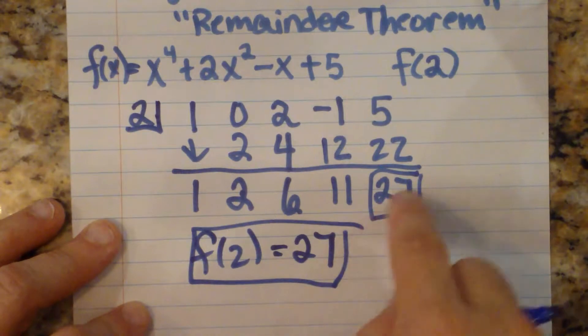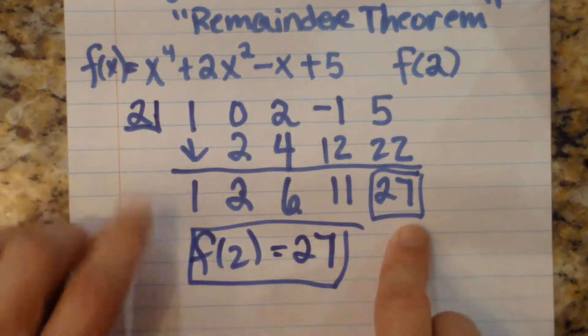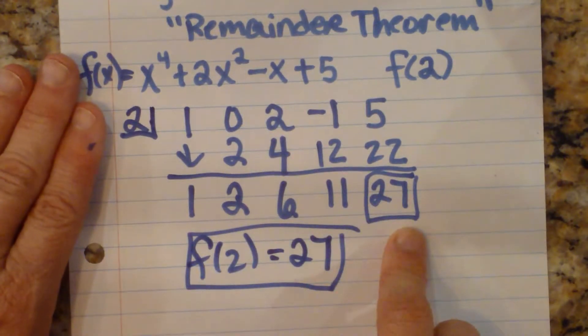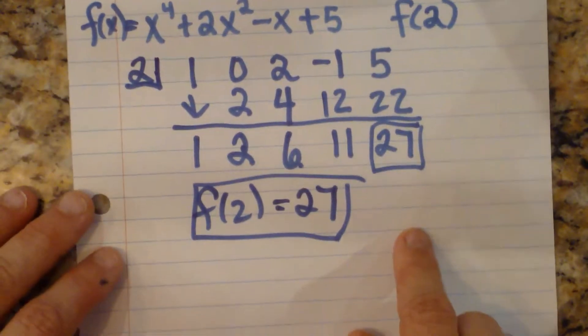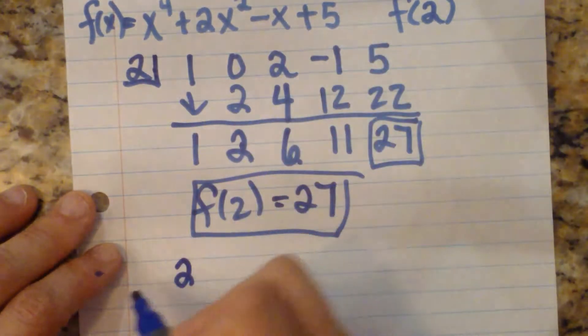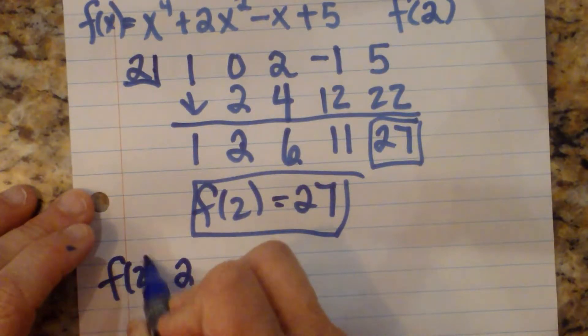And the remainder theorem tells us that when we evaluate the function for 2, we're going to get an output of 27. So let's just test our theory. Let's take 2 and plug it into the function. So we're going to do f of 2 the long way.